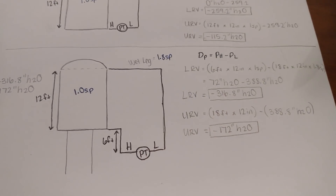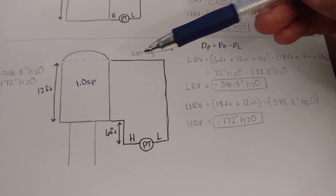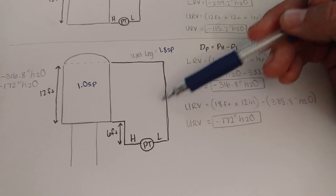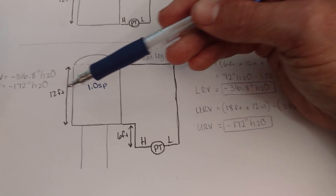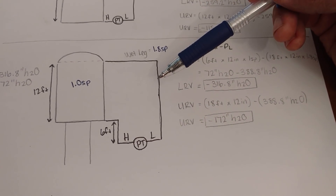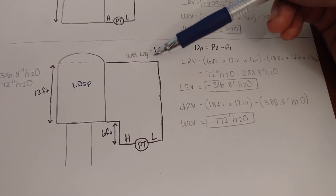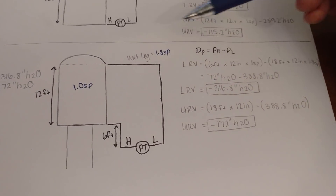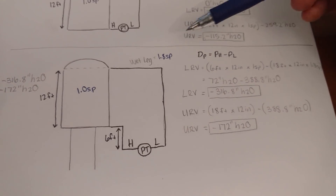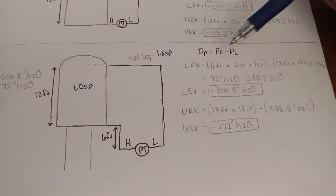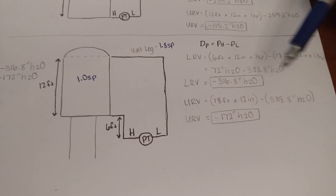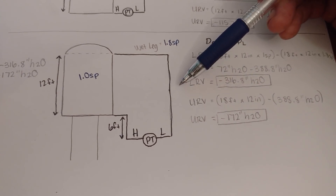Our pressure low is going to be 18 feet, because the entire pressure low side spans 12 feet of tank plus 6 feet below — that's 18. So: 18 feet times 12 inches times 1.8 specific gravity gives us our hydrostatic pressure for the low side. Pressure high minus pressure low gives us negative 316.8 inches H₂O. We're done with our lower range value.